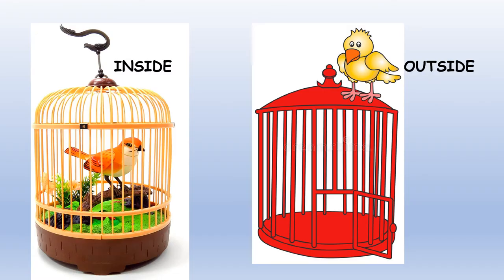Kids, here you can see two cages. In this cage, the bird is sitting inside. In this cage, the bird is sitting outside. Here the bird is inside the cage. And here the bird is outside the cage. Inside the cage. Outside the cage. Inside. Outside.